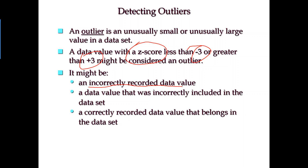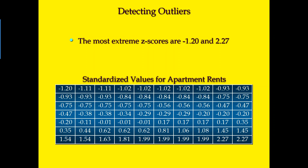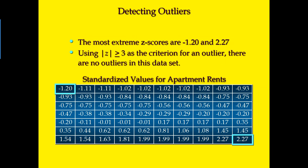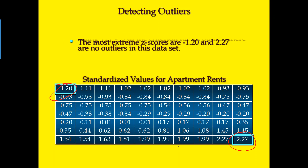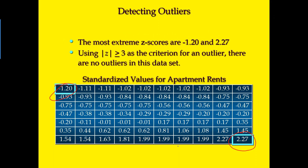Now let's apply this to our data set. These are the 17 apartments collected from the college town, converted to z-scores. Do we have any outliers? Remember the threshold: negative 3 and positive 3. The data here is ordered from smallest to largest z-score value. The smallest z-score is negative 1.2 and the largest is 2.27 — obviously none of them is outside the range. Therefore we do not have any outlier in this data set.